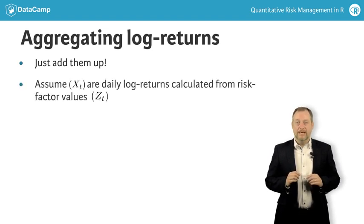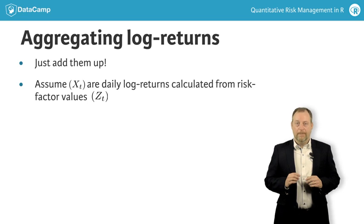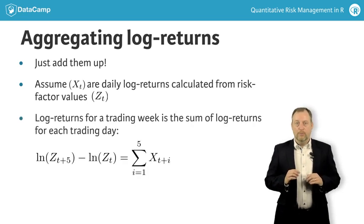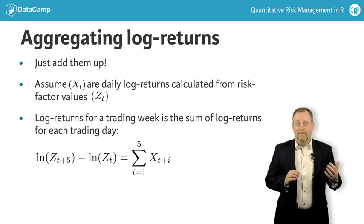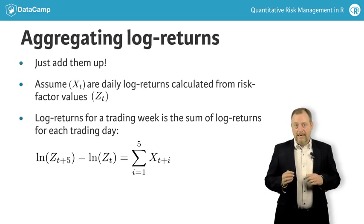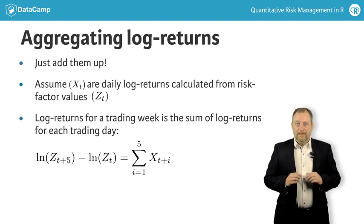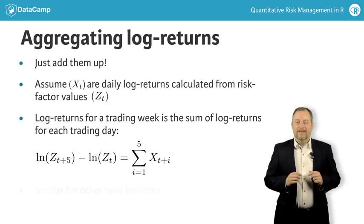Let's assume that the series XT are daily log returns calculated from daily risk factor values ZT, and that ZT is a price series for some asset traded on weekdays. To get the log return for a whole trading week starting on day T — effectively the previous Friday evening before markets open on Monday morning — and ending on day T plus 5, Friday evening again, you would calculate the difference: log of ZT+5 minus log of ZT. It can be shown that this is just the sum of the log returns for each of the trading days, and a similar calculation works for any aggregation period.